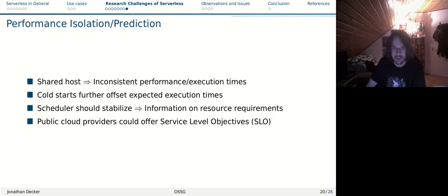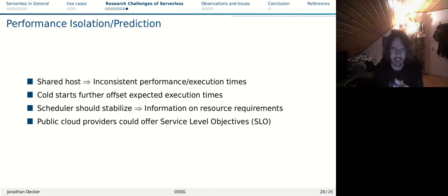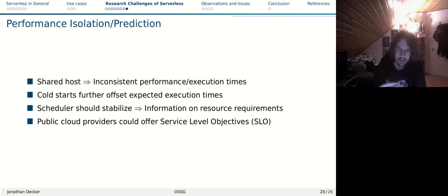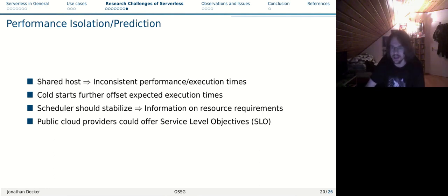The last point is performance isolation. Since we're sharing our hosts, we might get inconsistent performance execution times when running our functions. When running a function, we might expect it to take a certain number of seconds to return, but this may vary a lot since the host might be busy with other functions, or it might need to perform a cold start. The option of a scheduler taking information about resource requirements of functions, or cloud providers offering this as a feature, is somewhat still open and not the standard.